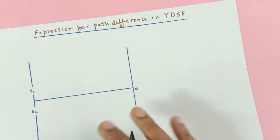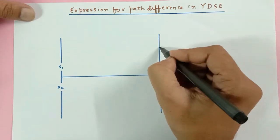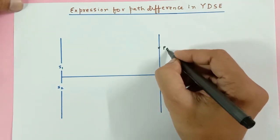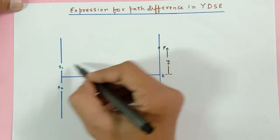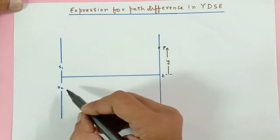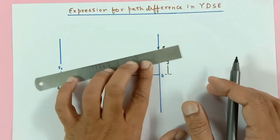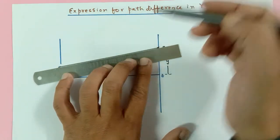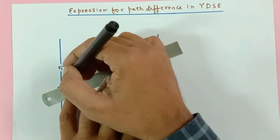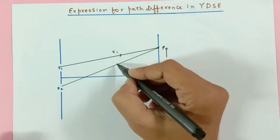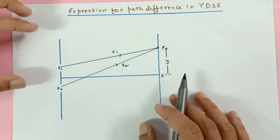Now let us go back to our main experiment. We have slits s1 and s2, and suppose this is point P on the screen, which is at a distance y above the center of the screen. The waves from s1 will travel to P and the light waves from s2 will also travel to P, traveling different distances — this distance is r1 and this distance is r2.